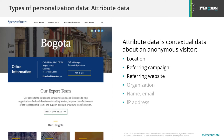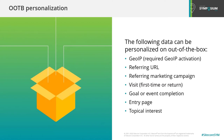Attribute data is contextual data about an anonymous visitor such as their physical location or the referring website. The picture here shows a site displaying personalized content based on geolocation. Note that not all of the attributes shown on this slide are available out of the box with Sitecore. Location, referring campaign, and referring website are available out of the box. The others — organization name, email, and IP address — require external data providers to access. Data available out of the box includes GeoIP, referring URL, referring marketing campaign, first time or return visit, goal completion, entry type, and topical interest.